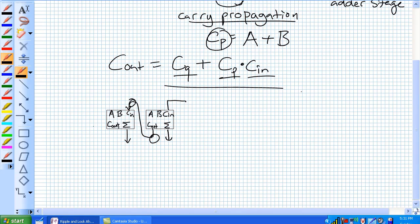So, according to our rules which we had over here, C out for stage 1 is going to be equal to the carry generated by stage 1 or